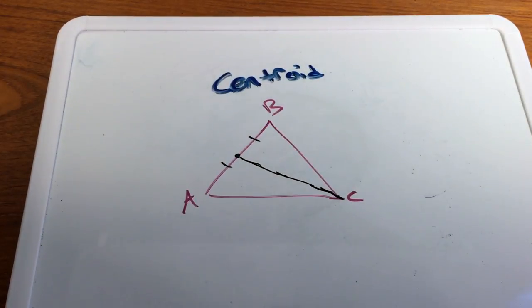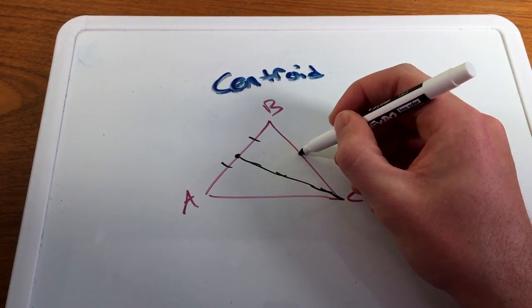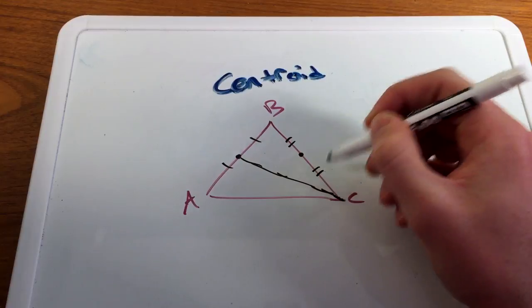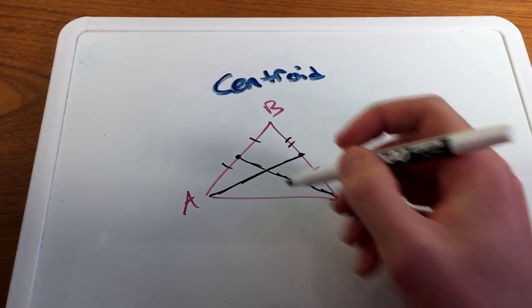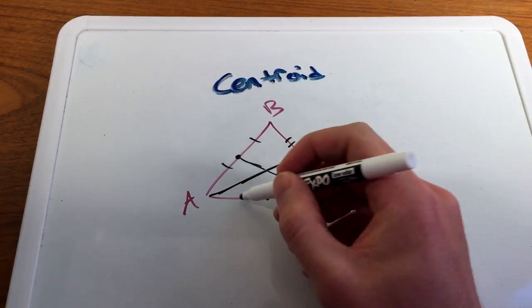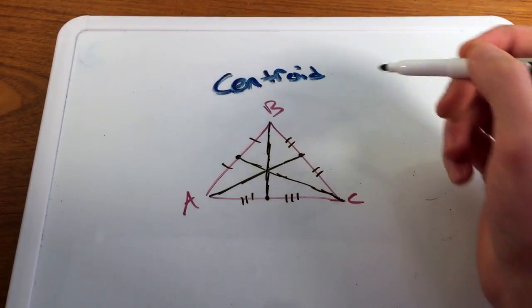And then we're going to do that all the way around, so we have another midpoint here. I'm going to connect it to its opposite vertex, voila, and then this last midpoint here is connected to its opposite vertex.